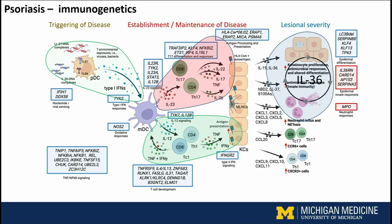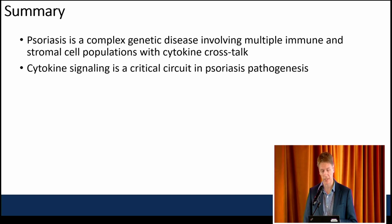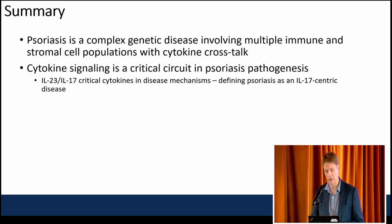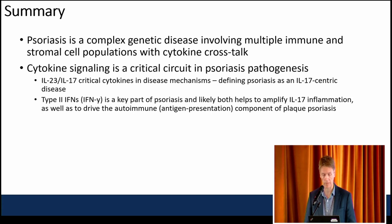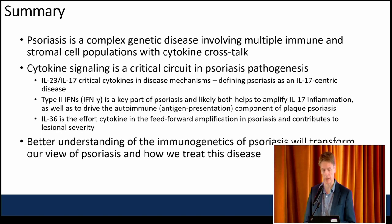To briefly summarize: psoriasis is a complex genetic disease involving multiple immune and stromal cell populations with fairly active cytokine crosstalk. Cytokine signaling is a critical circuit in psoriasis pathogenesis — IL-23 and IL-17 are critical cytokines defining psoriasis as an IL-17-centric disease. Type 2 interferon, interferon gamma, plays a key role and likely has two major roles: amplifying IL-17 or TH17 inflammation, and driving the autoimmune aspects of psoriasis through amplifying antigen presentation and processing. IL-36 is really active in the feed-forward amplification and contributes to lesional severity. A better understanding of the immunogenetics of psoriasis will transform how we treat this disease, and I still believe it holds the key to eventually curing psoriasis.